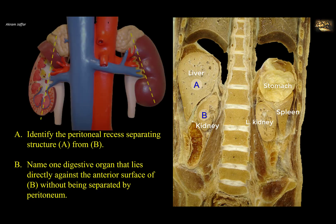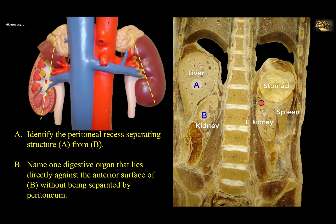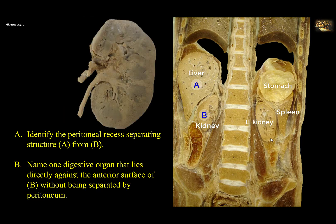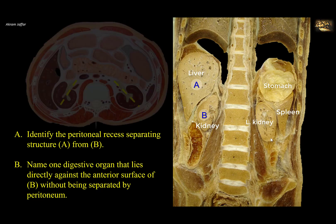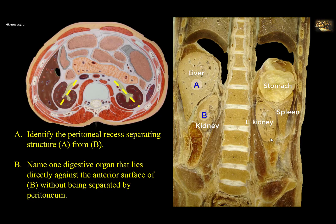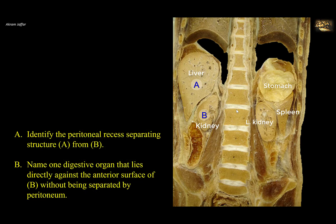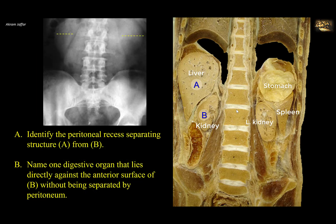Each kidney is obliquely set so that its upper pole is nearer to the midline than the lower pole. And although the section of the body is a coronal section, the kidney itself is not actually cut in a longitudinal section. The reason for that is that the medial side of the kidney, the hilum of the kidney, faces forward, because of the protrusion of the lumbar spine. Thus the transverse diameter of the kidney is foreshortened, and this can be detected in radiographs which show the soft shadow of the kidney.